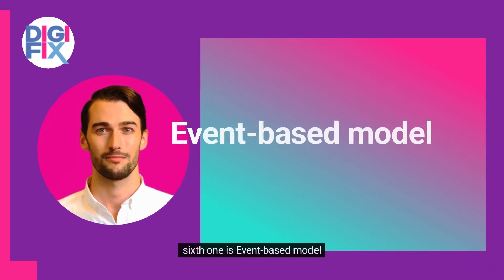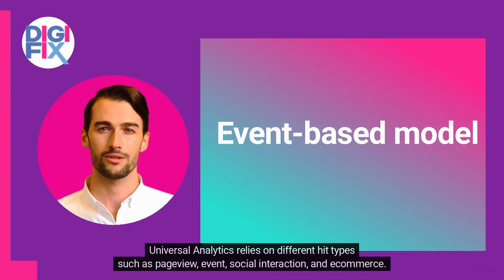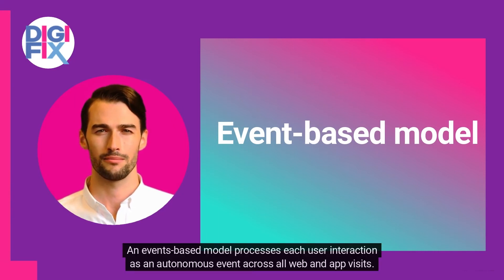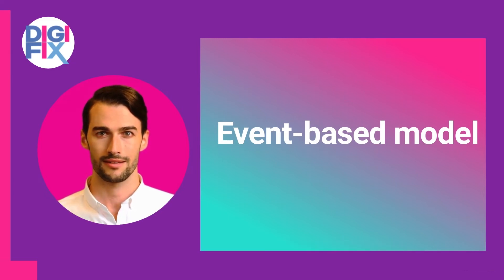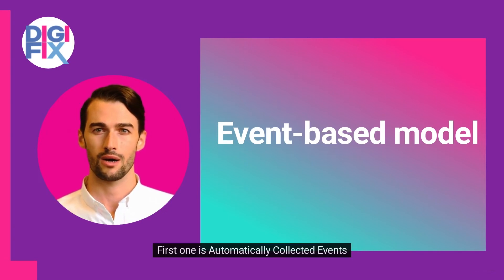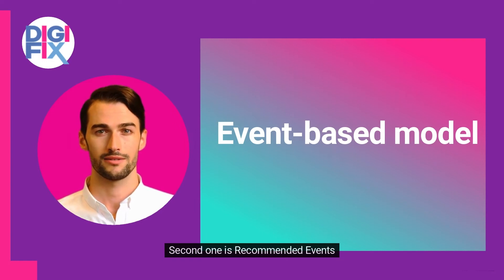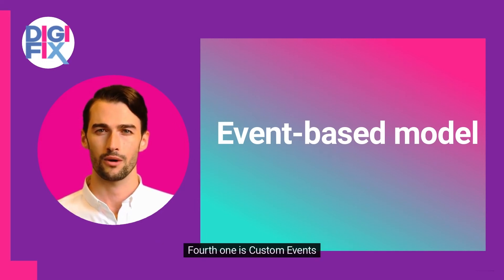The sixth change is the event-based model. Universal Analytics relies on different hit types such as page view, event, social interaction, and e-commerce. In GA4, everything is now an event. An event-based model processes each user interaction as an autonomous event across all web and app visits. Event building is one of the most significant Google Analytics 4 features, covering four types: automatically collected events, recommended events, enhanced measurement events, and custom events.